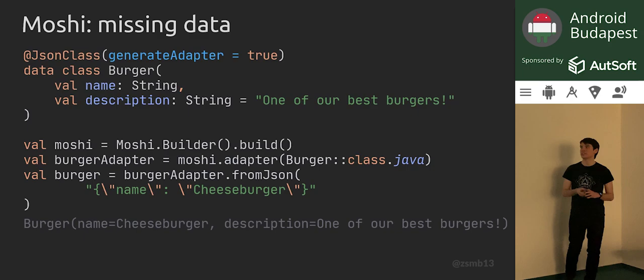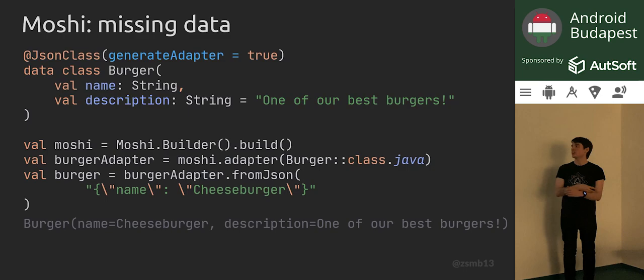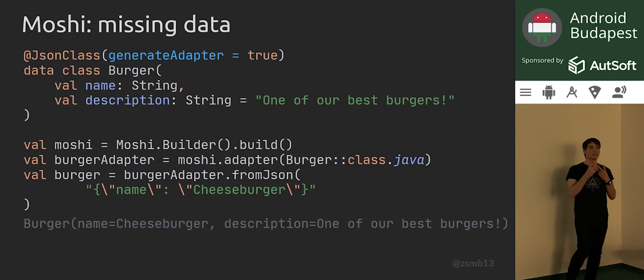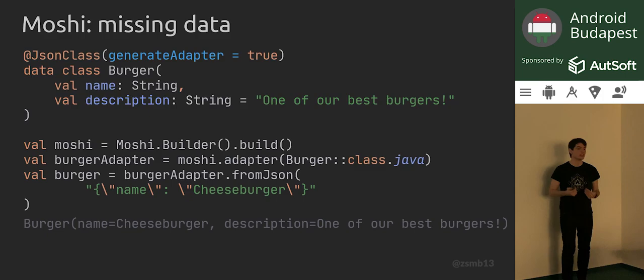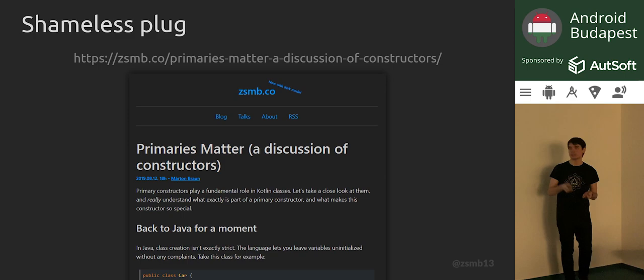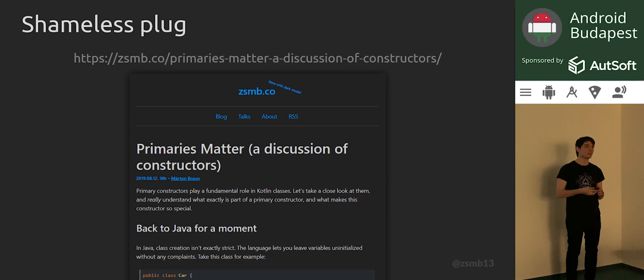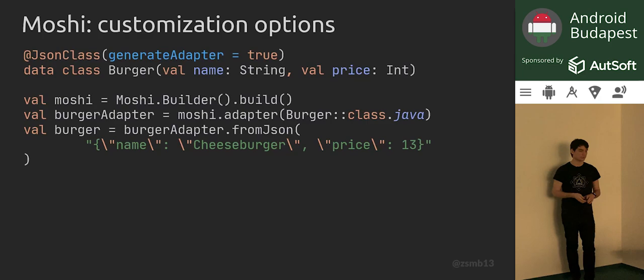One reason why Moshi works so well with all these Kotlin things is that it doesn't use newInstance for creating objects. It always calls constructors, whether you're using the reflection-based or code-gen-based Moshi APIs. Kotlin has very strong guarantees for initializing classes via their constructors, which I've written about — you can check out that article for more info.